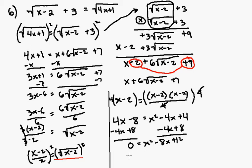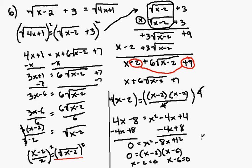I can rewrite this trinomial as a binomial product: 0 is equal to x minus 2 times x minus 6. The zero product rule tells me that when two things multiplied together equal 0, one or both of them are equal to 0. So x minus 2 equals 0 gives x equals 2, and x minus 6 equals 0 gives x equals 6.